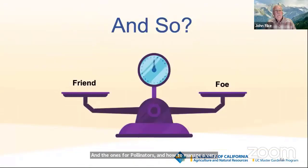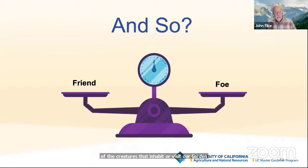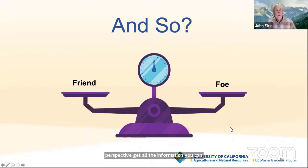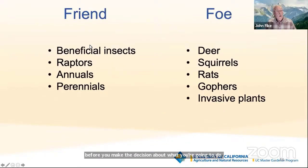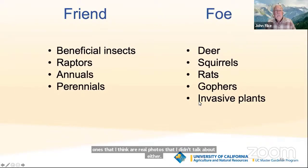I hope you have a different perspective of some of the creatures that inhabit or visit our garden ecosystems. It's not always easy, but I hope you'll start thinking about it from the friend and foe perspective. Get all the information you can before making the decision about what you're going to do. Here are some organisms I think are real friends that I didn't have time to cover, and some I think are real foes that I also didn't get to.